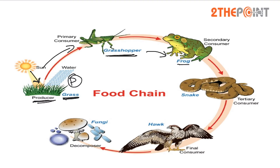The frog is fed upon by a snake, and the snake is fed upon by a hawk. Finally, the hawk's body after decomposition is fed upon by a decomposer organism called fungi. This is an example of a food chain in nature.